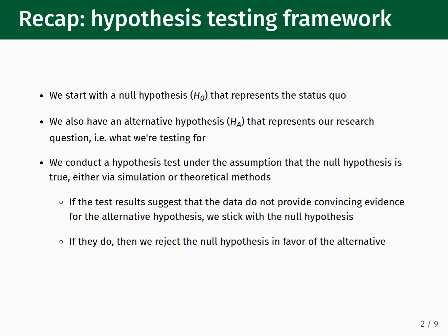To recap, the procedure for conducting a hypothesis test is as follows. We start with a null hypothesis, sometimes symbolized as H sub 0, that represents the status quo. We also have an alternative hypothesis, sometimes symbolized as H sub A, that represents our research question — in other words, the effect that we're testing for. Once we collect our data, we conduct the hypothesis test under the assumption that the null hypothesis is true. This step is quantitative and can be completed either using a numerical simulation or theoretical methods. If the test results suggest that the data do not provide convincing evidence for the alternative hypothesis, we stick with the null hypothesis. If the test results do provide convincing evidence, then we reject the null hypothesis in favor of the alternative.